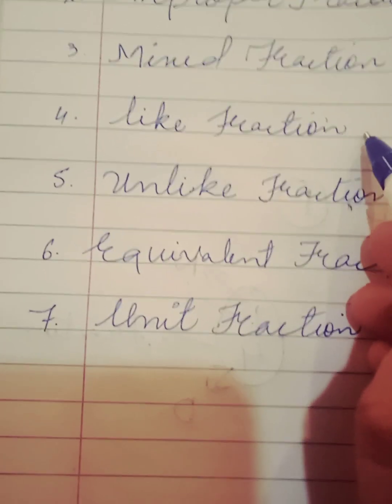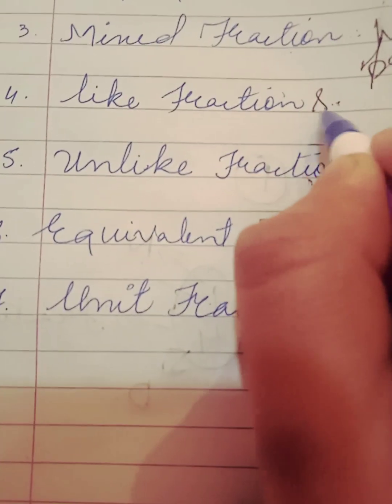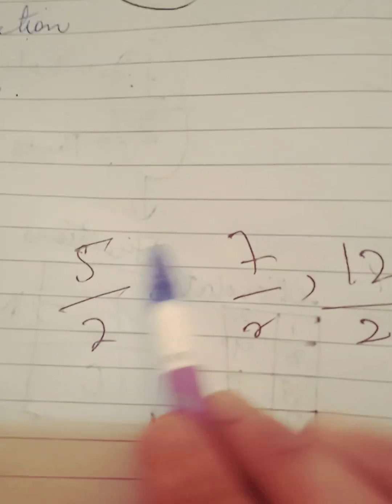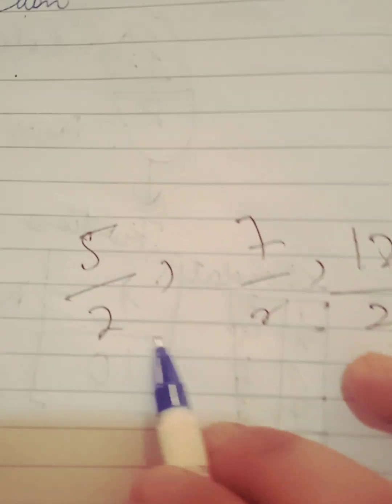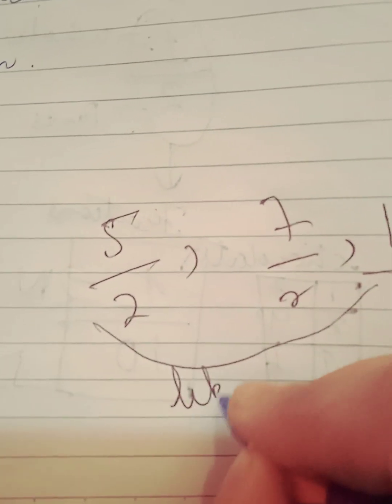The fourth type is like fractions. Like fractions are fractions whose denominators are the same. We have 2 or more fractions with the same denominator. For example: 5/2, 7/2, 12/2 — the numerators are different but the denominators are all the same, which is 2. So these are called like fractions — fractions with the same denominator.